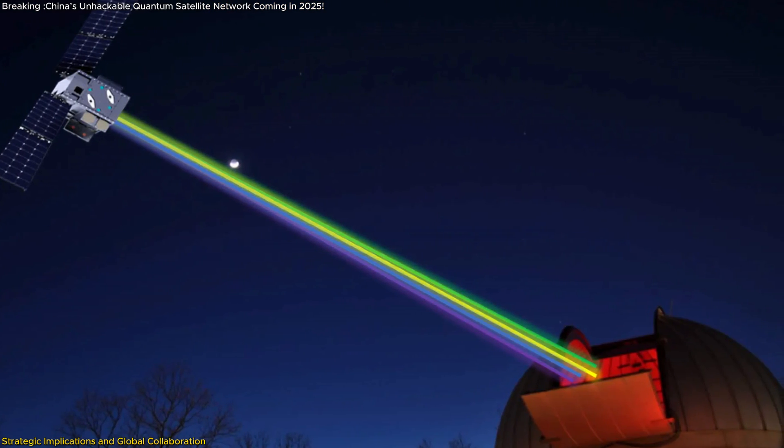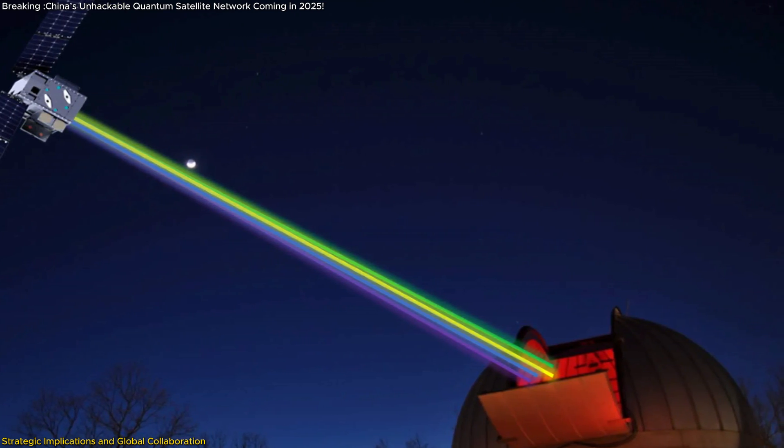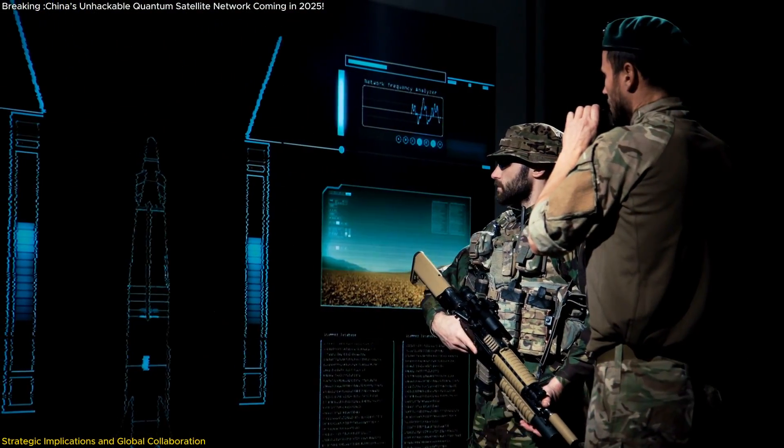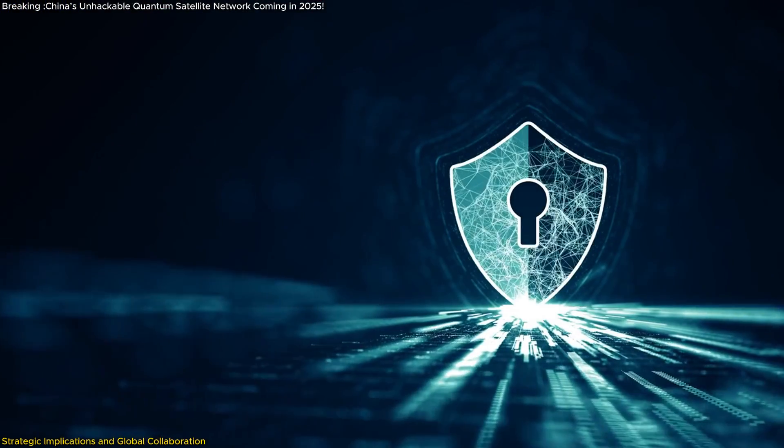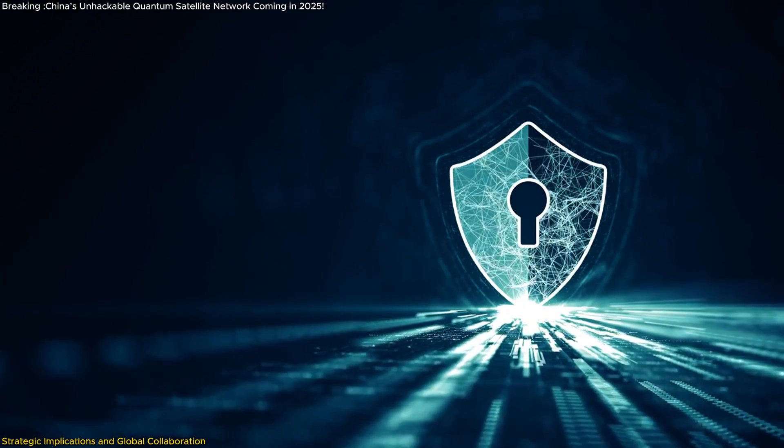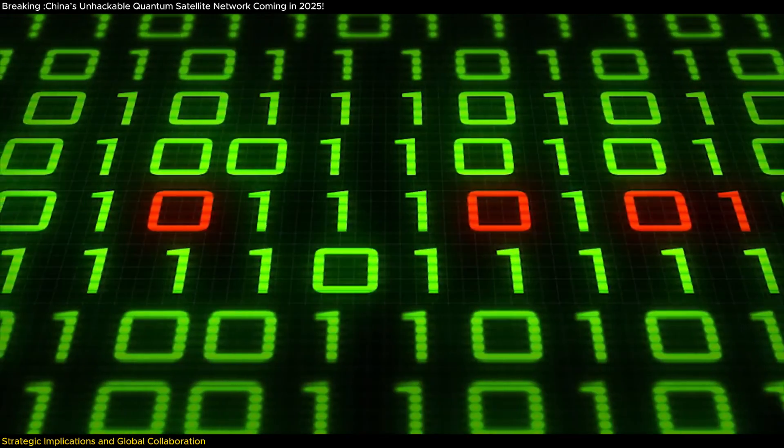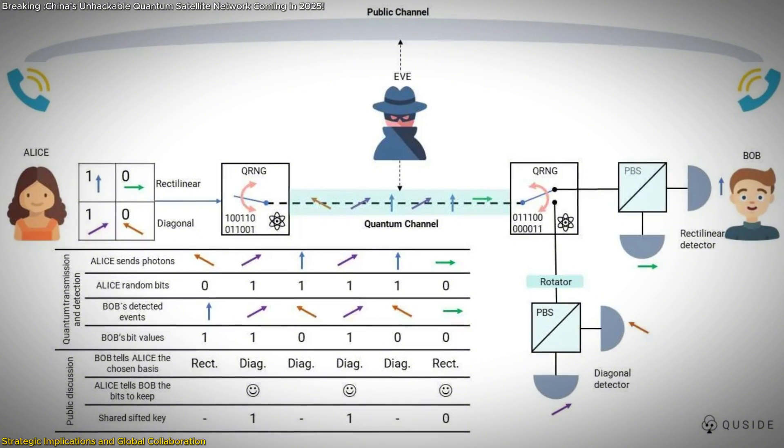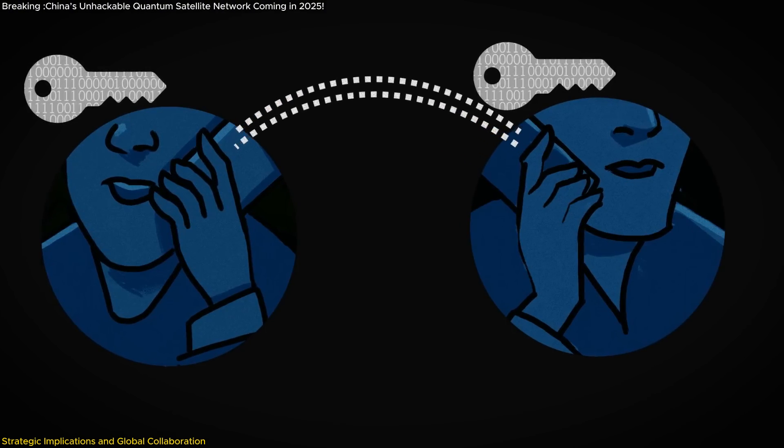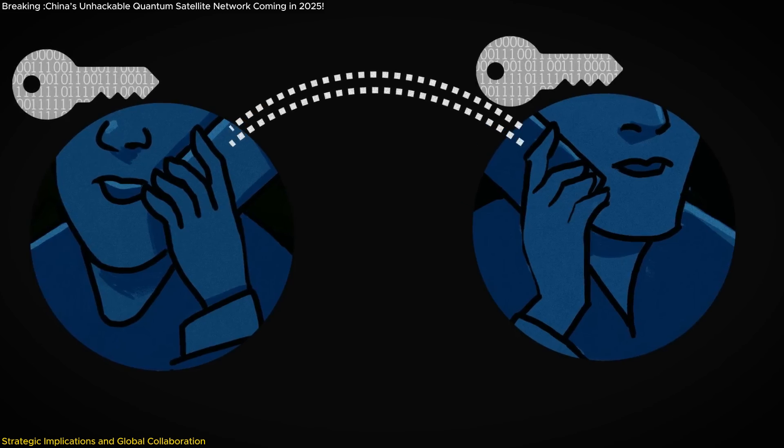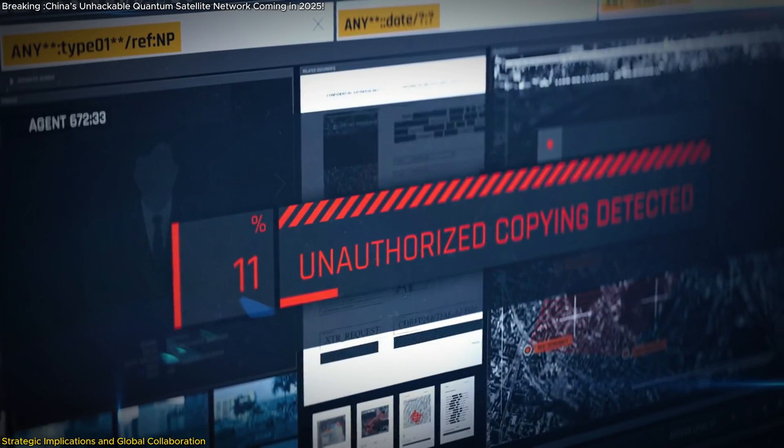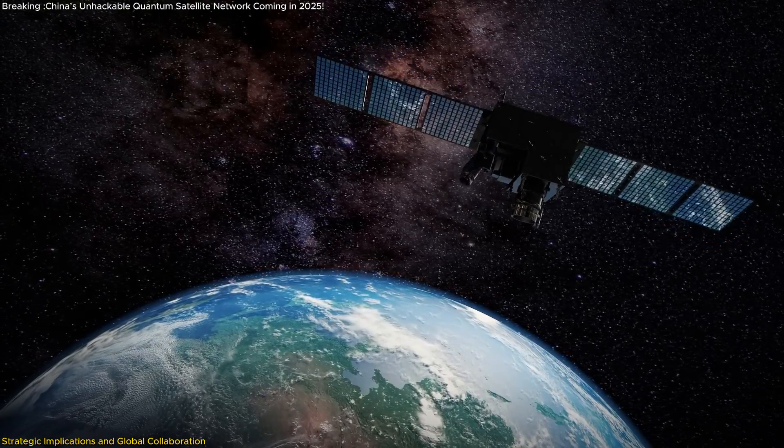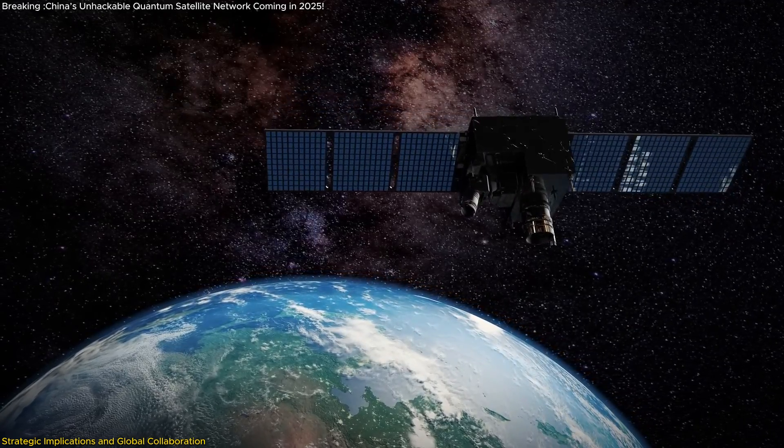Quantum communication's resistance to eavesdropping makes it an ideal solution for transmitting sensitive information, whether it's government secrets, financial data, or military communications. Traditional encryption methods rely on complex mathematical algorithms that can potentially be cracked with enough computational power. However, quantum key distribution QKD operates on the principles of quantum mechanics, which means that any attempt to intercept or tamper with the quantum keys will immediately alter their state and make the intrusion detectable. This makes QKD-based communication practically unbreakable, providing a level of security that far surpasses current standards.